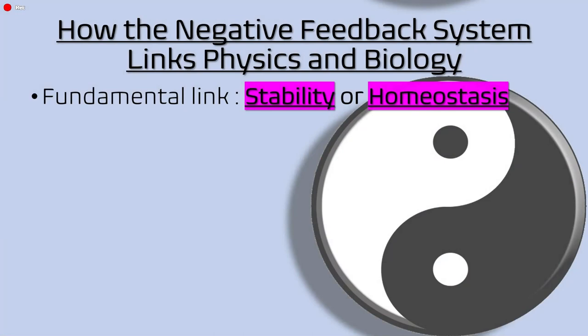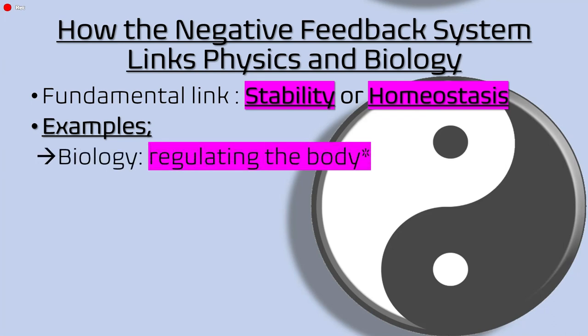By now you might be wondering: how does the negative feedback system link physics and biology? The short answer is that it is used in both, and that it is used to maintain stability or homeostasis. In biology, the negative feedback system is used to regulate the body. In this project, we will focus on one biological system: the maintaining of glucose levels in the body.